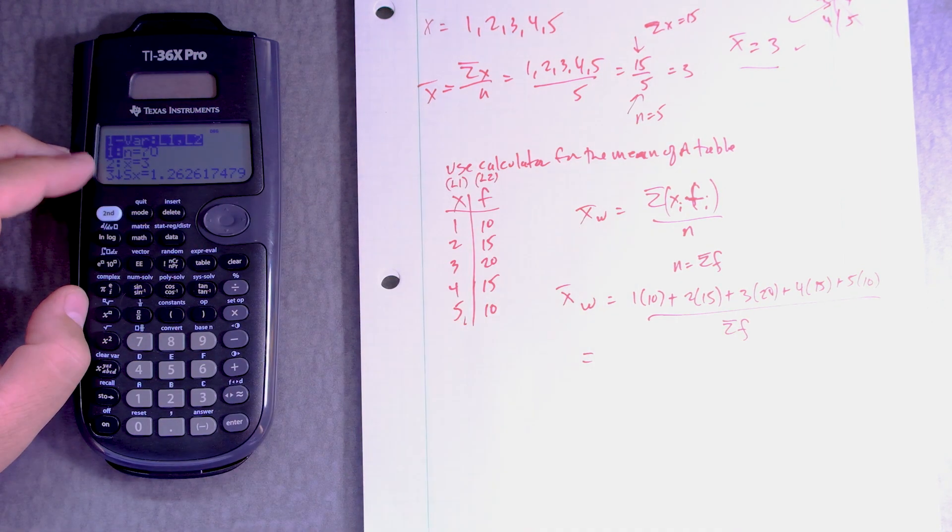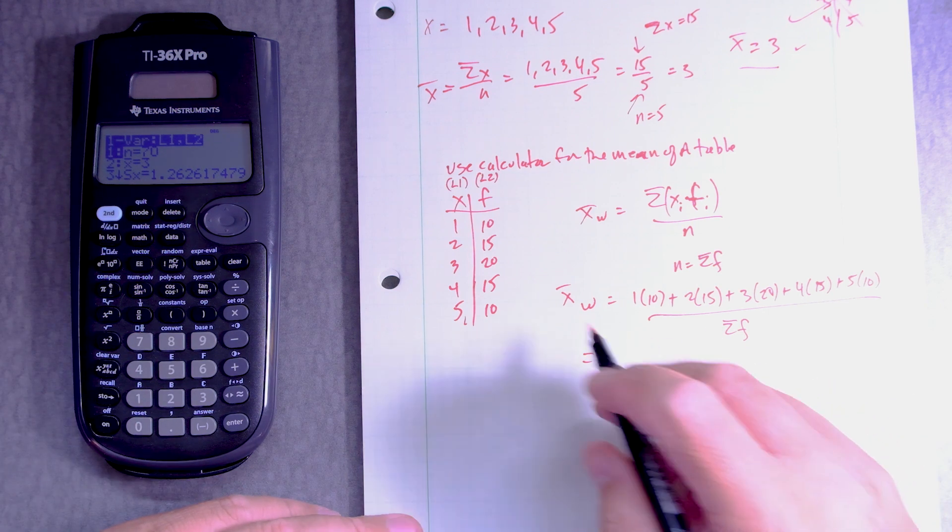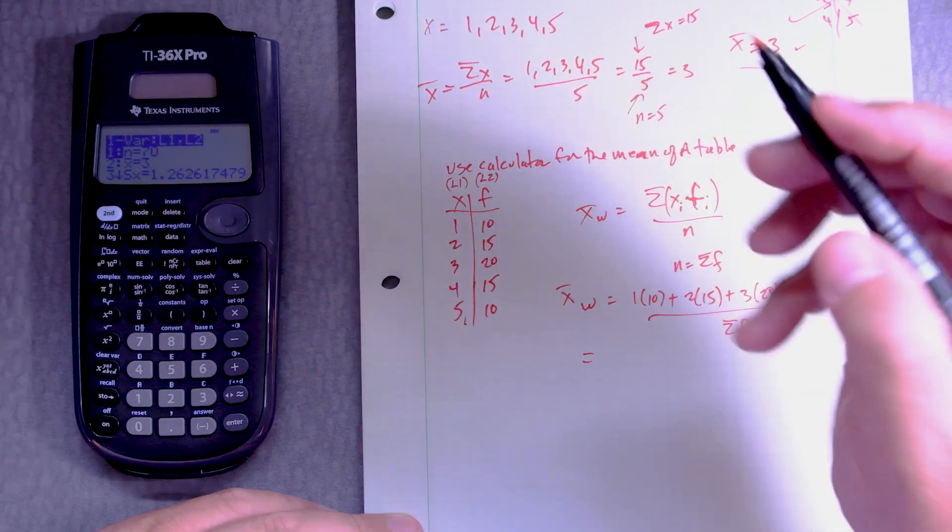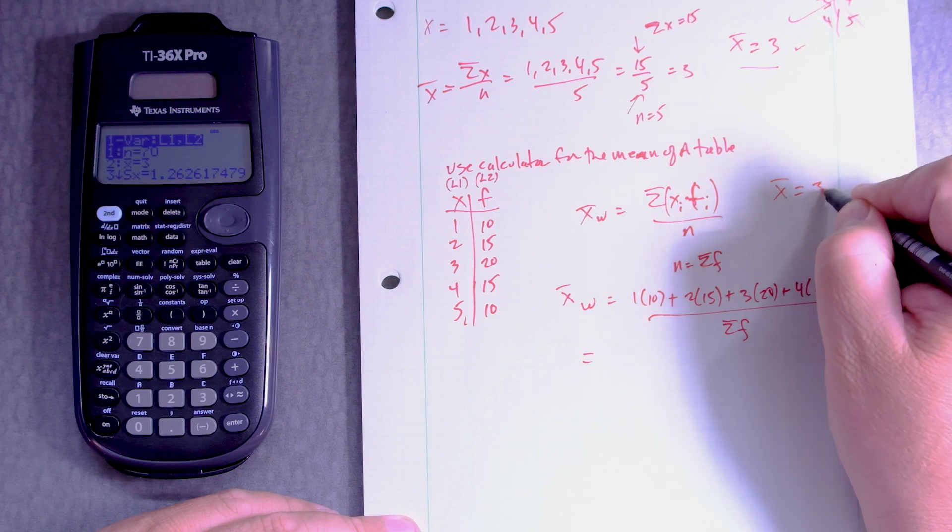Okay, so we can see here that it says the answer is x bar is equal to 3. X bar is equal to 3 and that is correct.